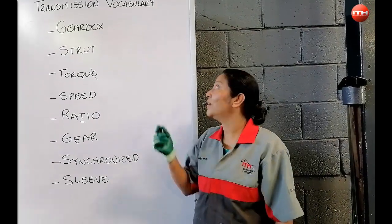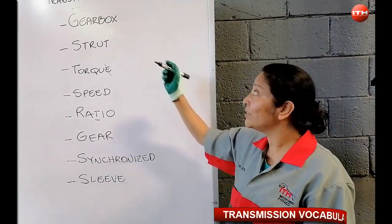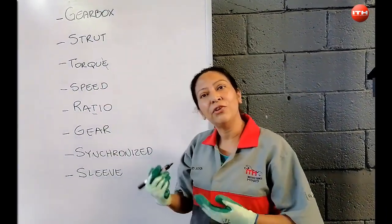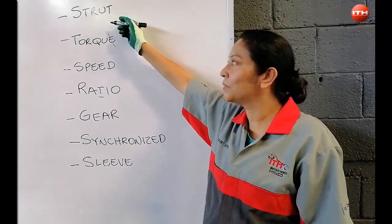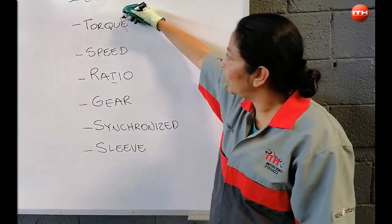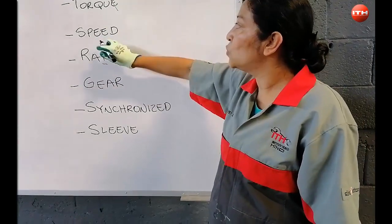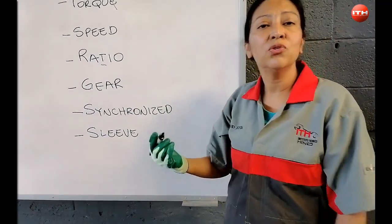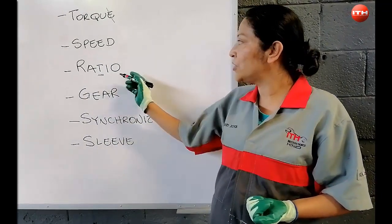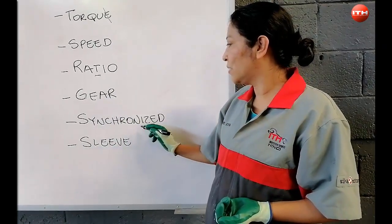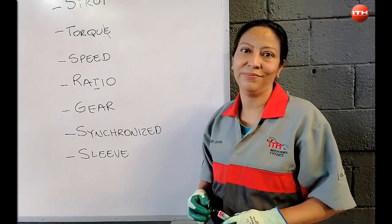This is the transmission vocabulary. Please pay attention. Gearbox — note that the letters E and A are together, so it sounds like an E: gearbox. Struts — not 'strut,' but struts. Torque — the letter E at the end is silent, so it sounds like 'tork': torque. Speed. Ratio. Synchronize. And sleeve. Thanks for your attention, we'll see you in the next video.